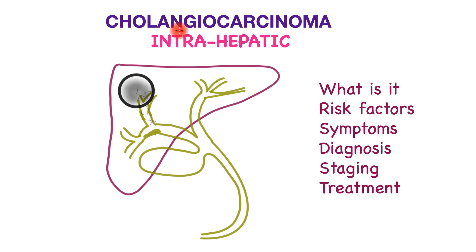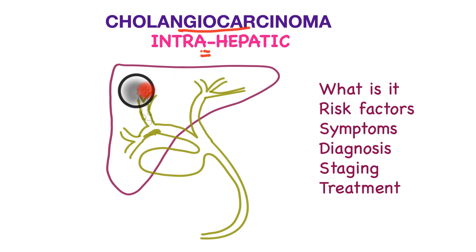In this video we will learn about cholangiocarcinoma. It is a primary liver tumor that arises from the bile ducts. This specific video is aimed at intrahepatic cholangiocarcinoma, the type that forms a mass within the liver.